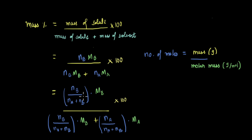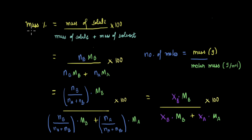All the terms in the large brackets can be replaced by the mole fractions. So we get mass percent equal to XB times MB divided by XB times MB plus XA times MA, multiplied by 100. We have now expressed the mass percent as a function of the mole fraction of the solute, XB, and the mole fraction of the solvent, XA.